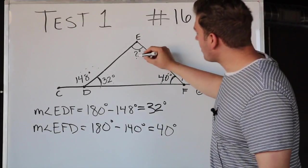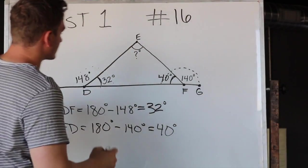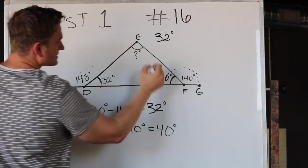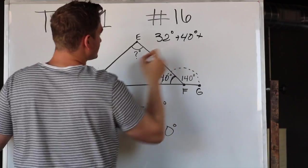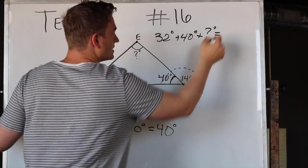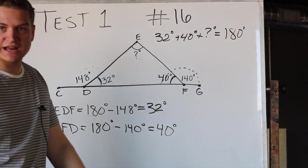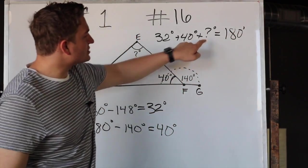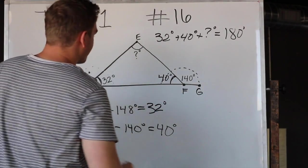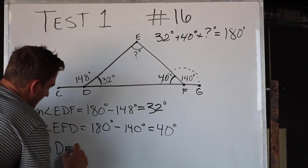So if we call this angle question mark, we know that since this is a triangle, 32 degrees plus 40 degrees plus our mystery angle equals 180 degrees. These three have to add up to 180. So if we want to find the measure of our mystery angle, which is the measure of angle DEF.